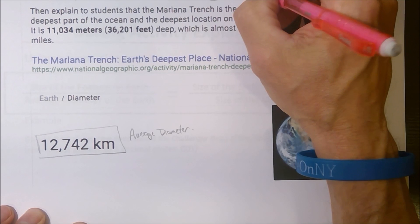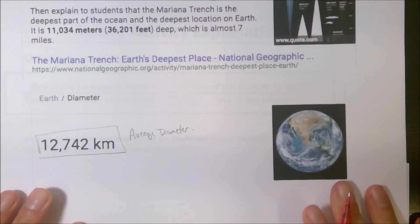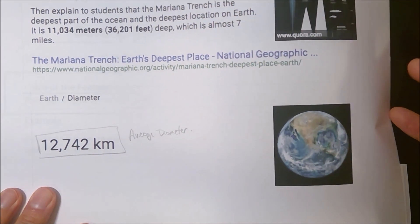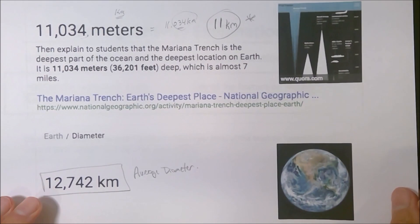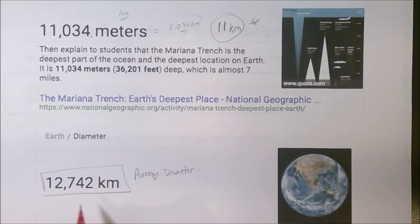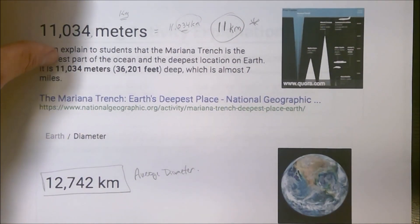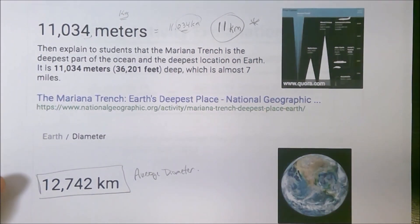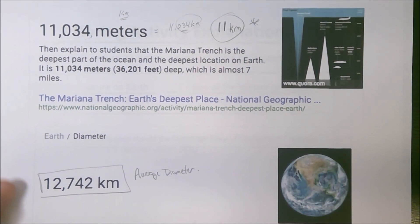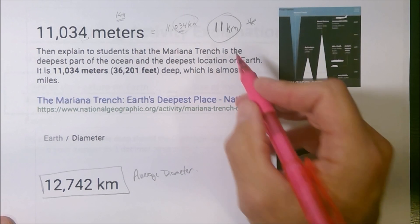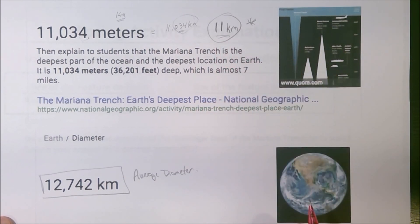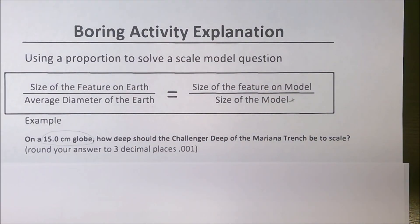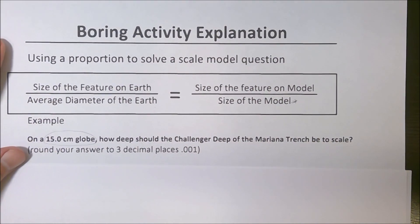So now we're saying our feature is 11 kilometers. That's the depth of the Mariana Trench. And the size of our planet is 12,742 kilometers. So we can use our proportion to try to figure out how deep this should actually be on an 11-kilometer feature on a 15-centimeter globe. I've got the proportion there.